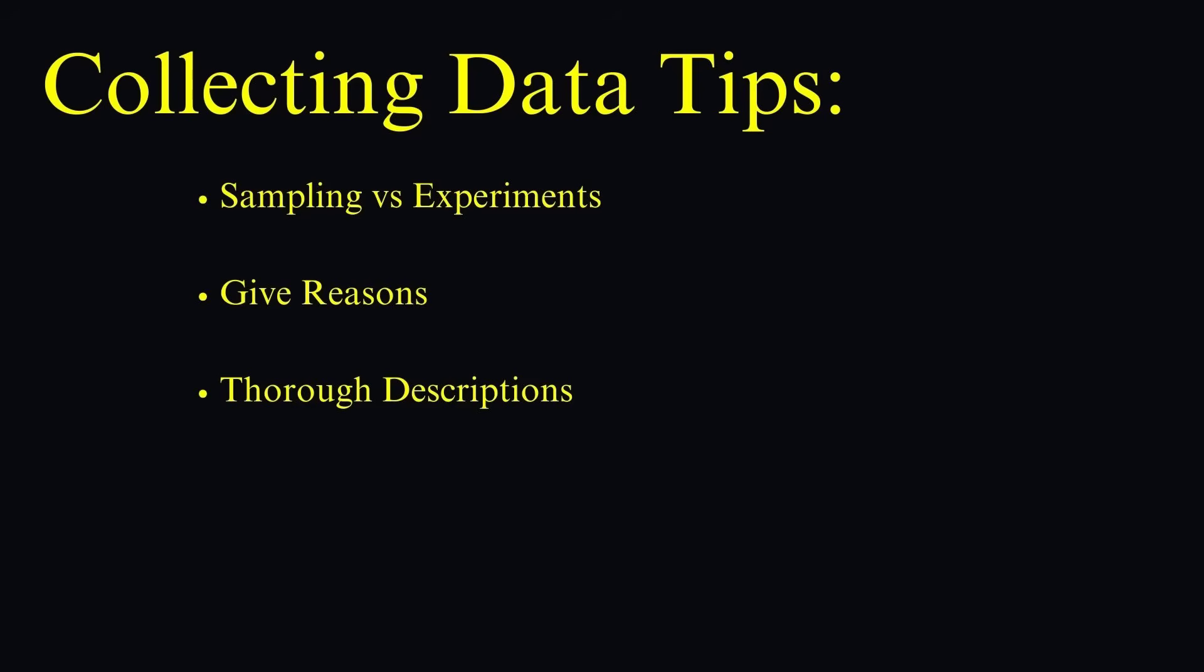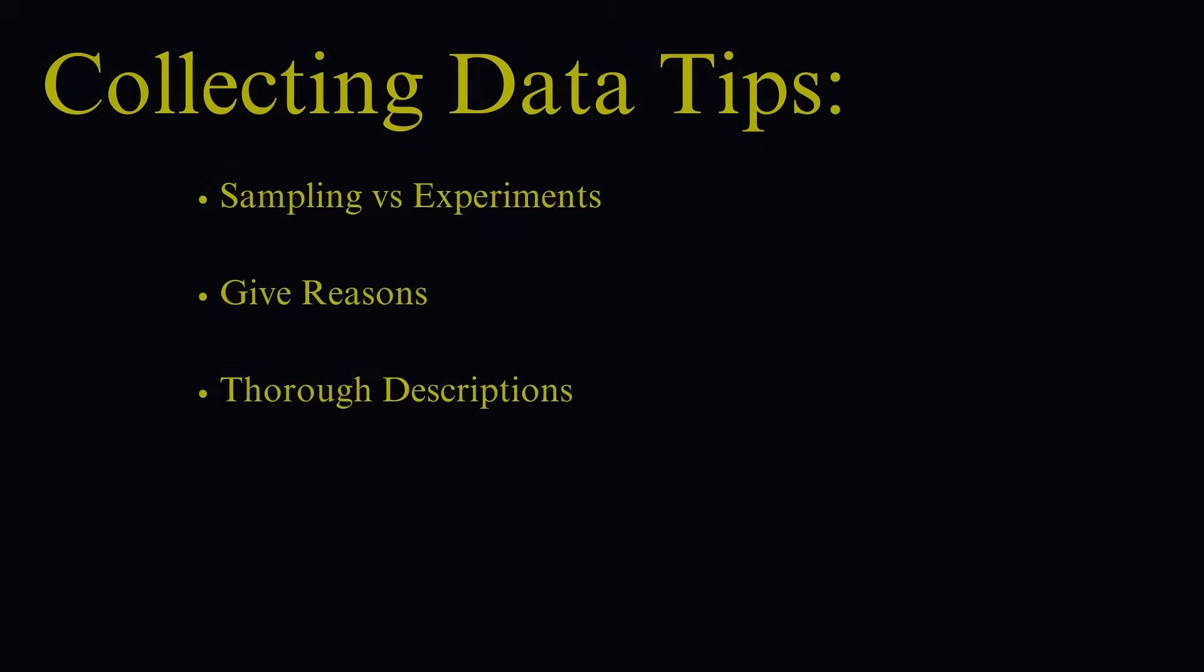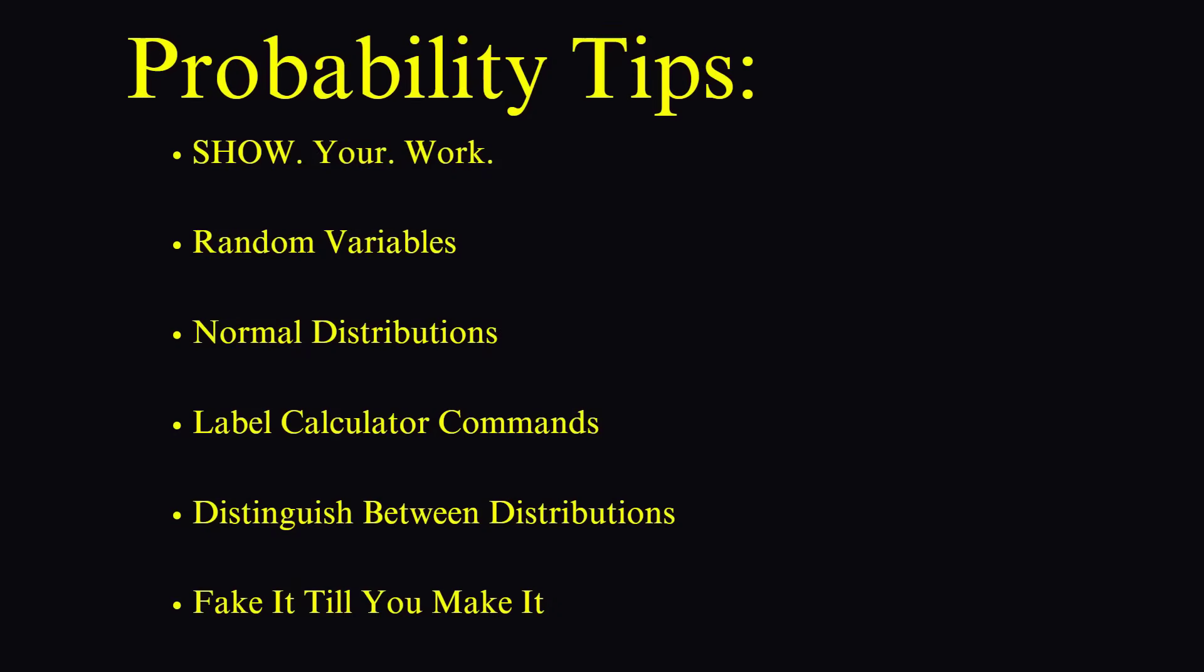And also, if you're asked to describe a method for random selection or assignment, be specific. Say whether it's with or without replacement. And include how you would do it, whether it's a random number generator, a random digits table, or slips of paper. And yes, if you use slips of paper, don't forget to mention that you'll shuffle those.